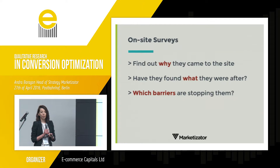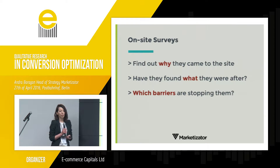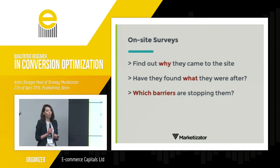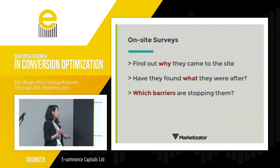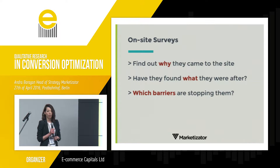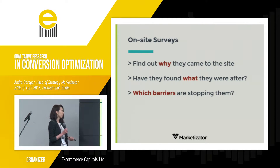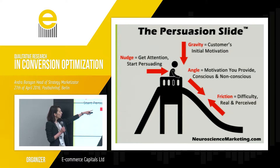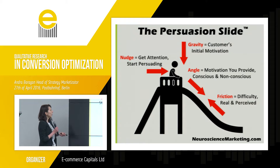On-site surveys help you find out why they came to the site — what are they looking for, can they find their needs there, have they found what they were after, does your offer match their needs, and which barriers are stopping them. As with any other website, you have obstacles that get in the way of their purchase. Find out which those are and address them. A very good analogy for this is the persuasion slide — we'll be focusing on gravity, angle, and friction.